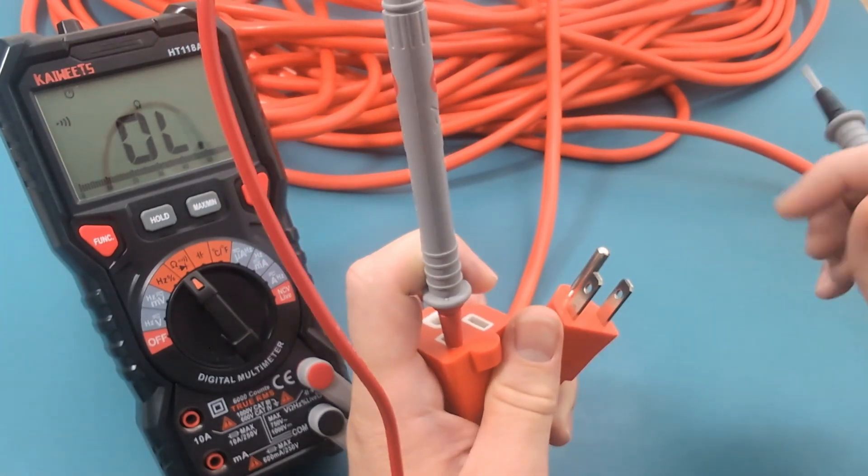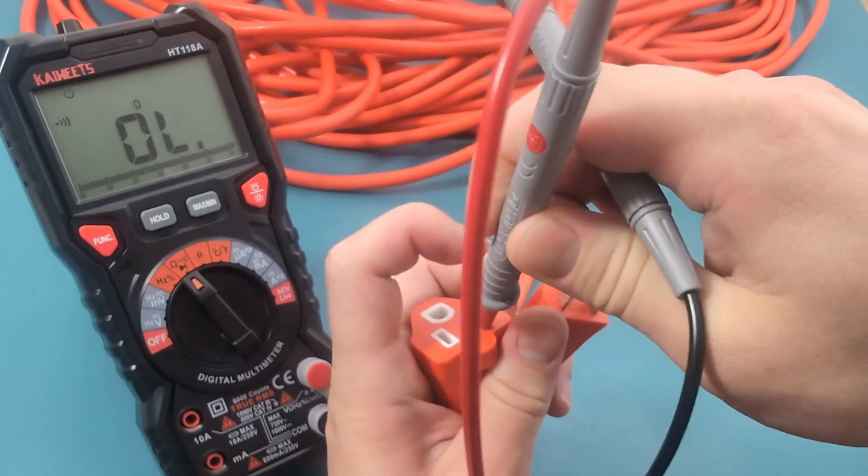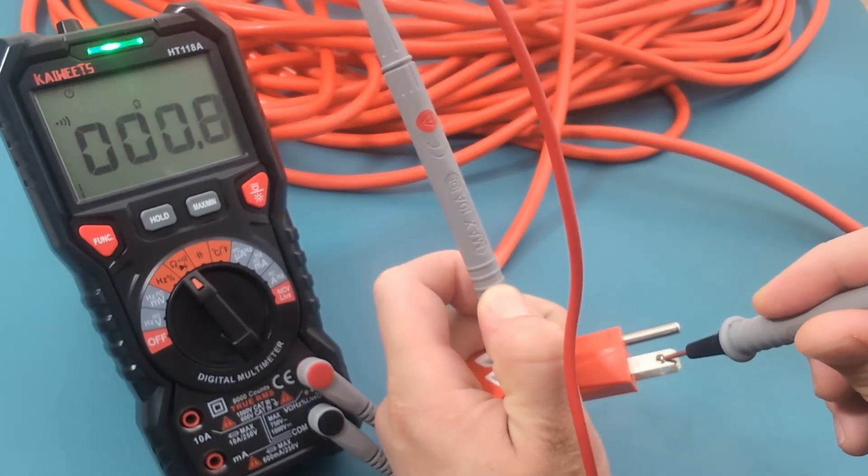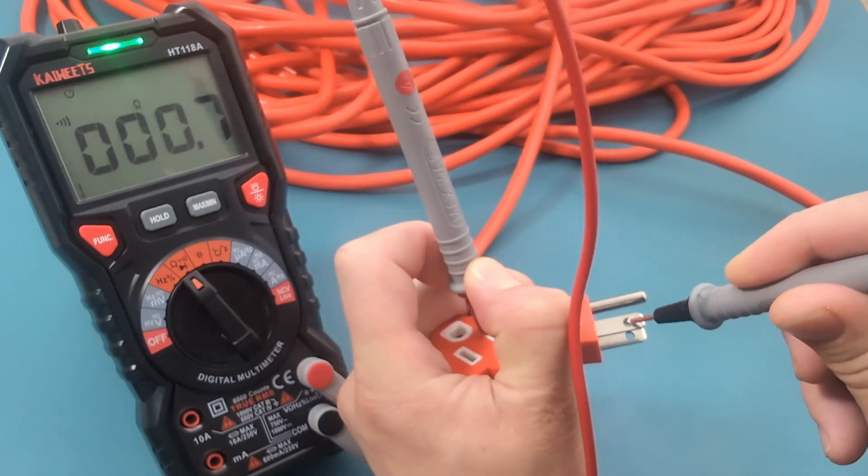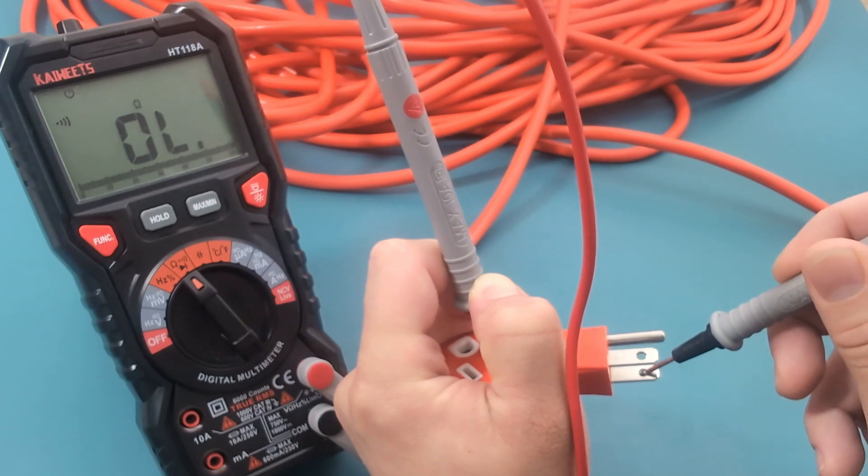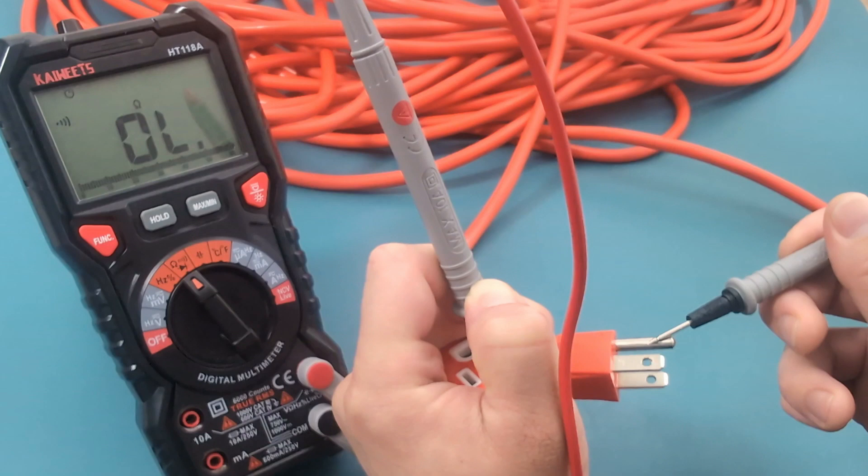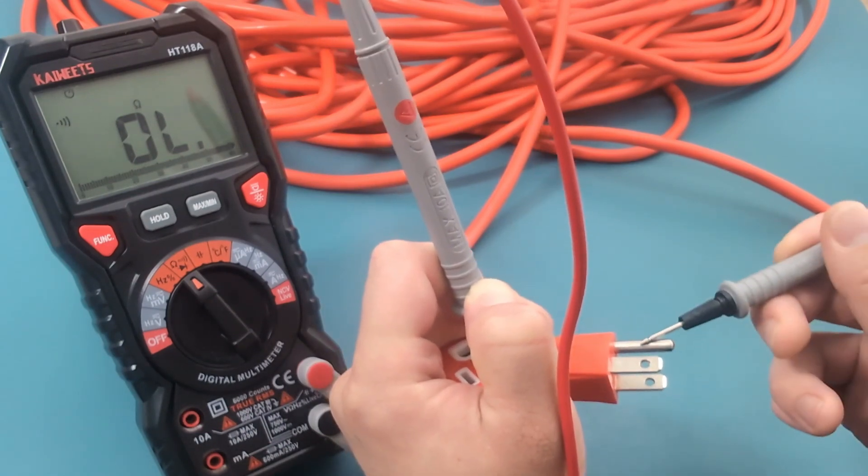Let's move to the neutral side of the plug. The reading shows around 0.8 ohms. Let's check the other terminals. There is no continuity or resistance for the other terminals. The neutral terminals are good.